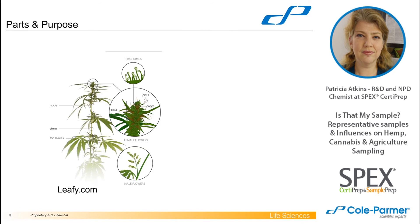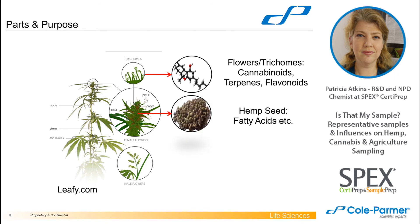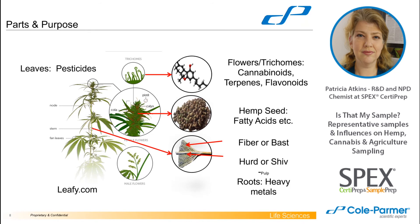If you look at a cannabis plant, there are some areas traditionally considered to be high in terpenes, flavonoids, and cannabinoids — those are the trichomes, the flowers, the buds. But if you're doing hemp as a nutraceutical and looking for fatty acid content, you're going to be looking more at the hemp seeds. And if using it for an industrial purpose, looking for fiber content, you'll be looking at the roots, stem, bast, or shiv — the other parts of the plant besides the flowers and leaves.